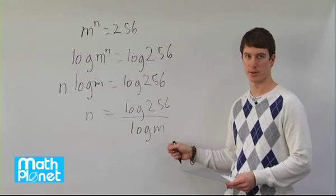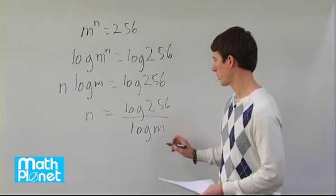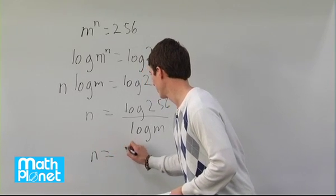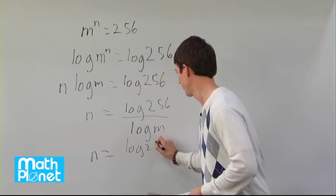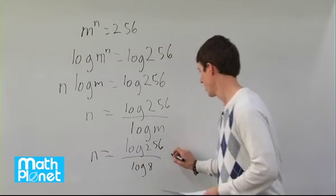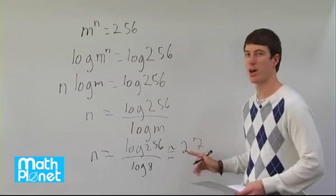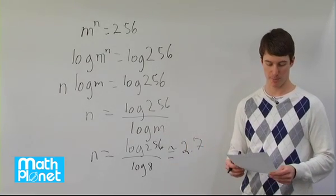If we plug in different values into our calculator, we can test them. Plugging in 8: n equals log 256 over log 8, which equals about 2.7. This is not an integer for n, so therefore our answer is B, 8.